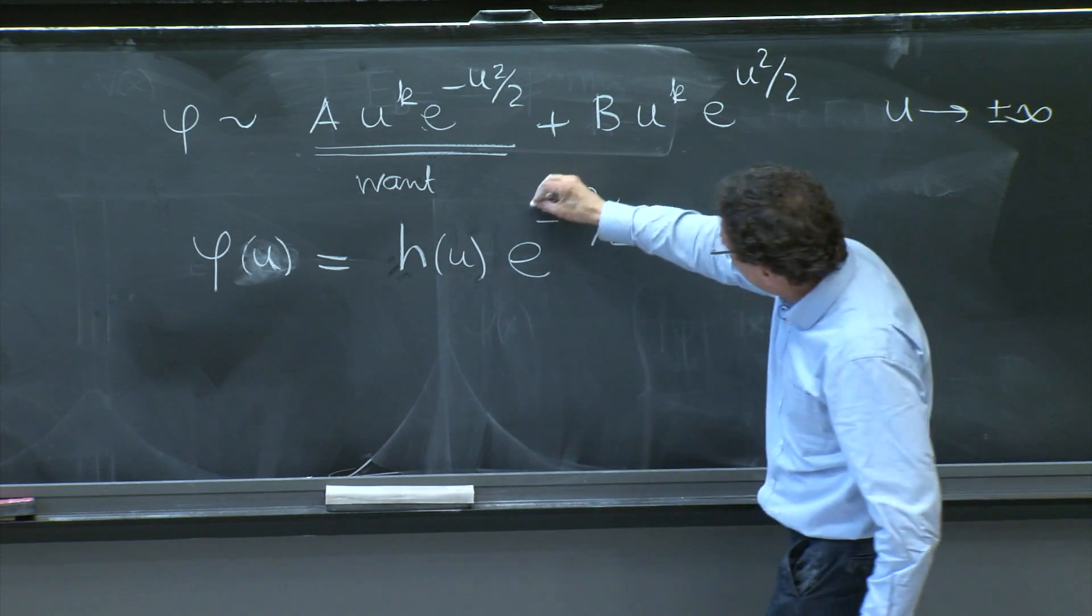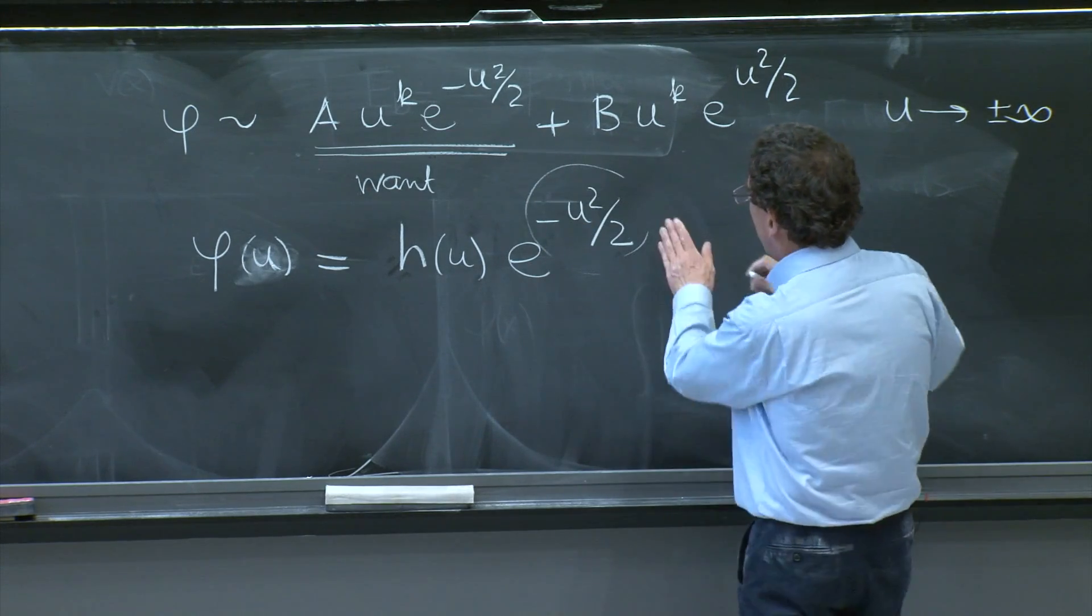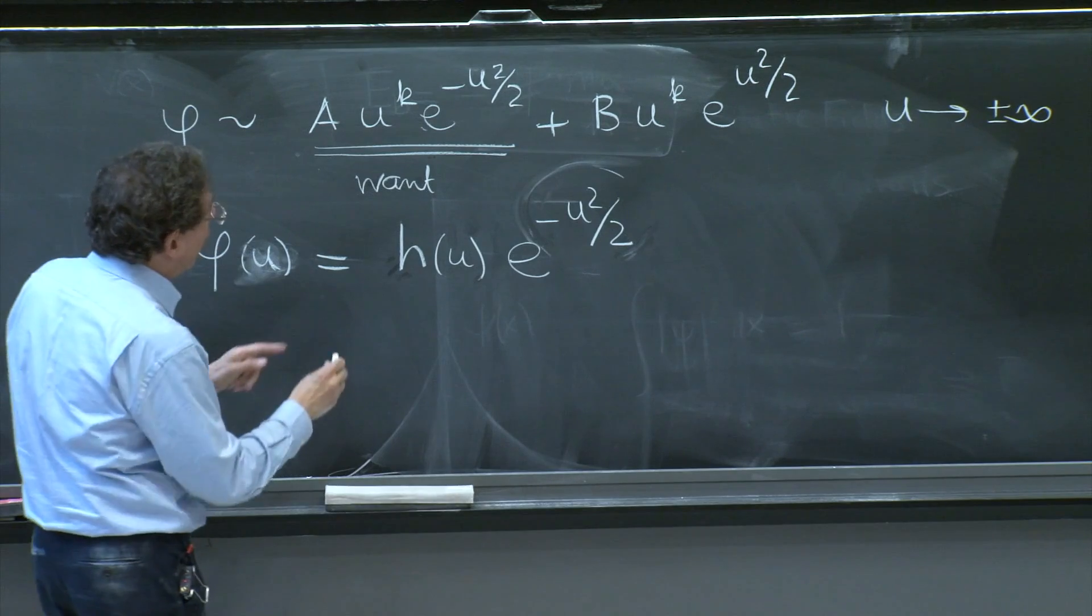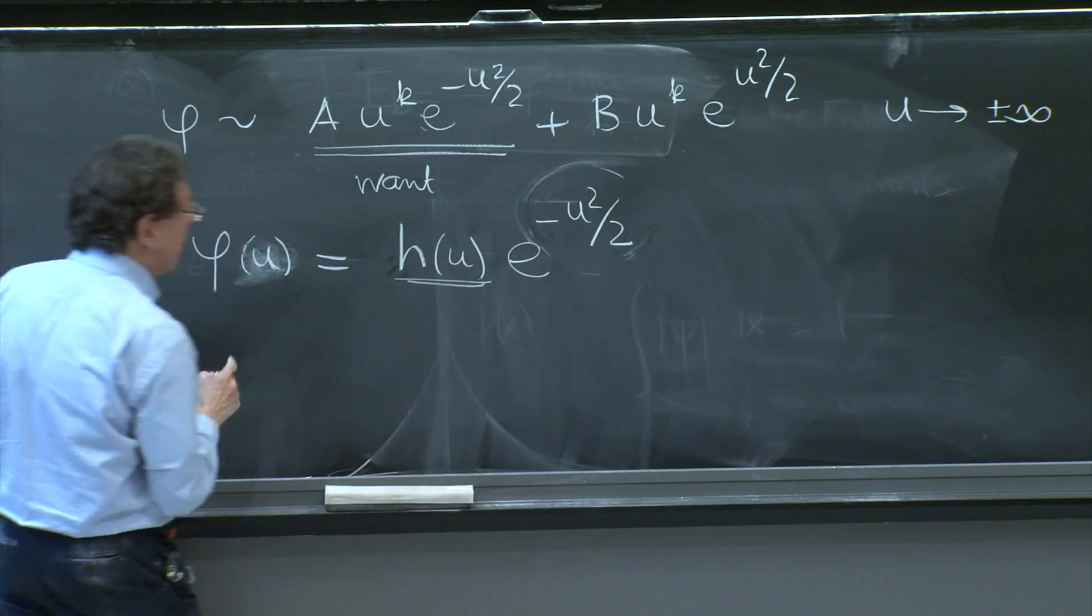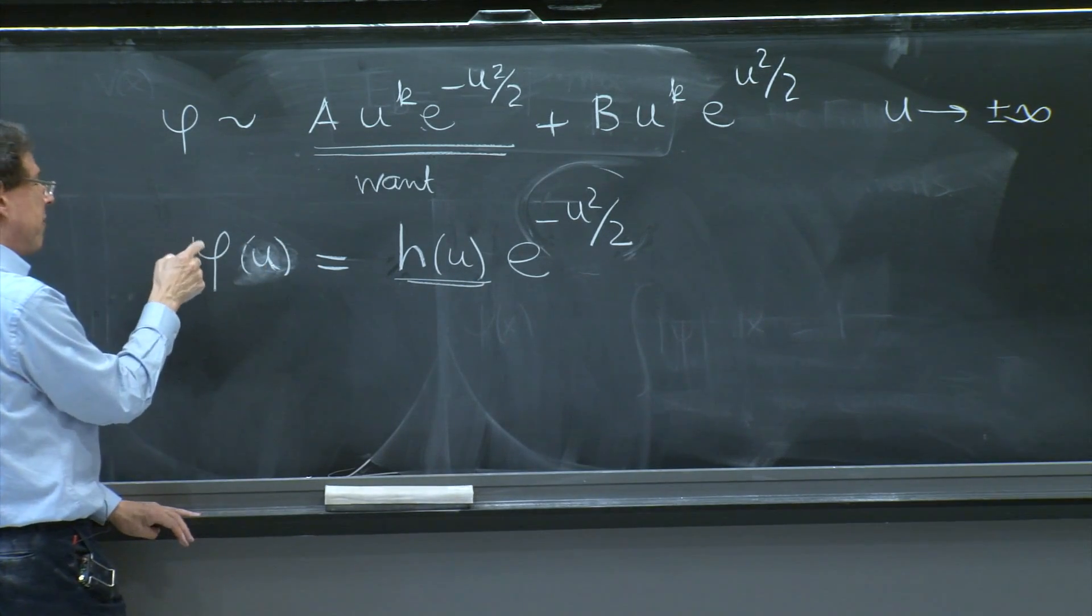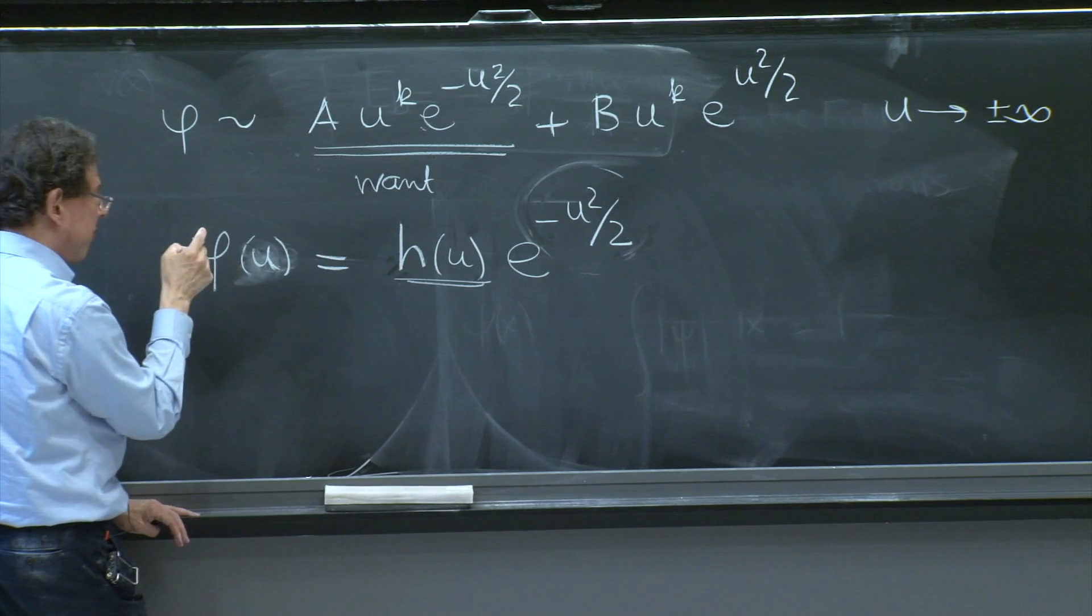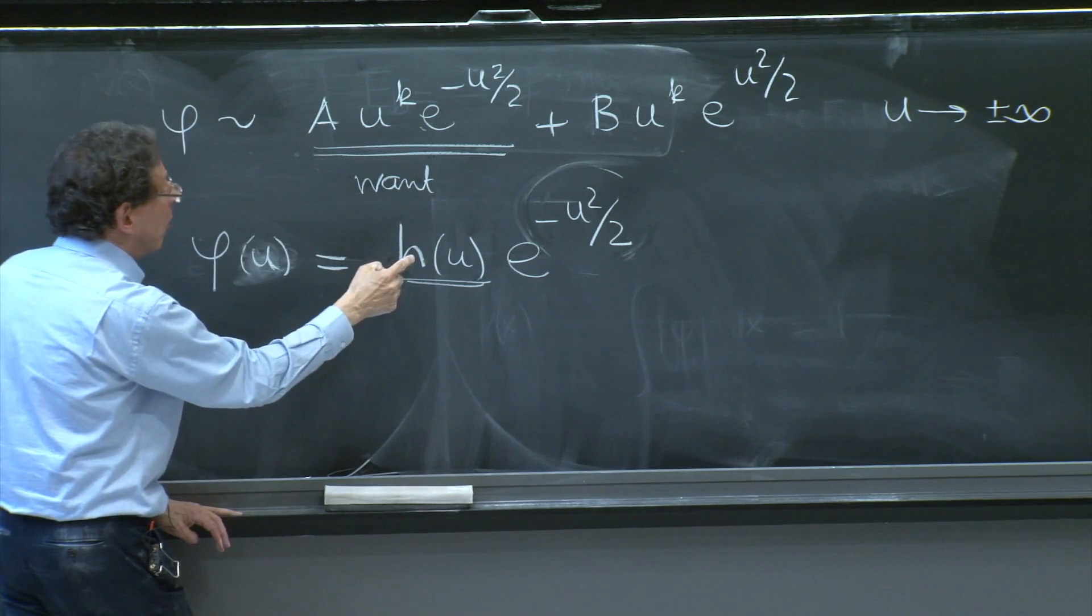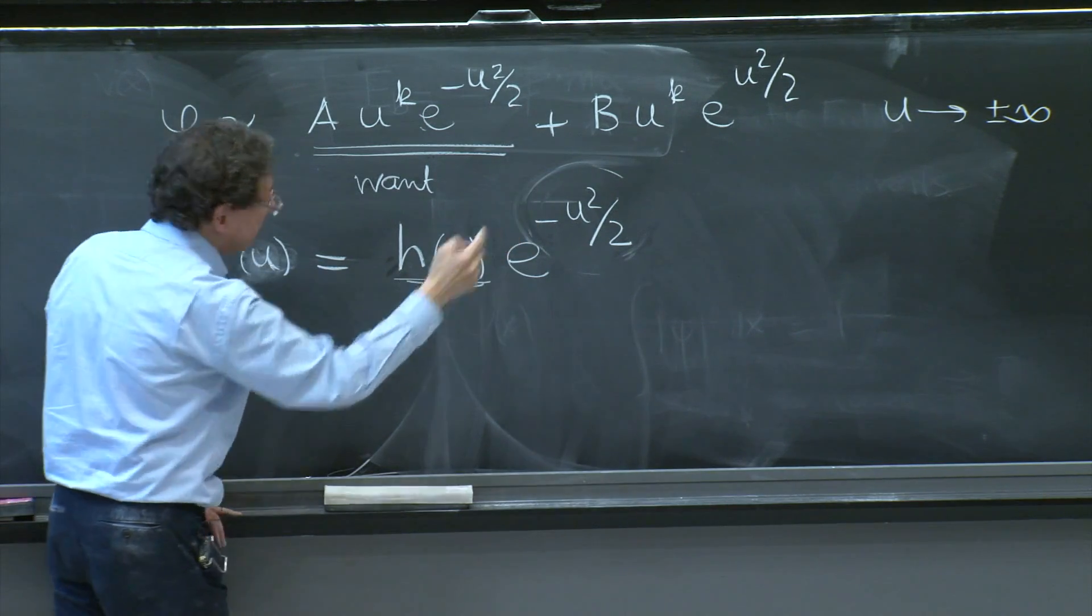But this should be nice, because it has sort of the right behavior already. And here is the hope. The hope is that this function now is a proxy for φ. If you know h, you know φ, which is what you want. And this function, hopefully, won't diverge.